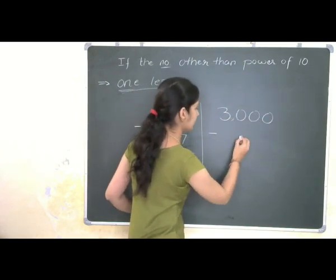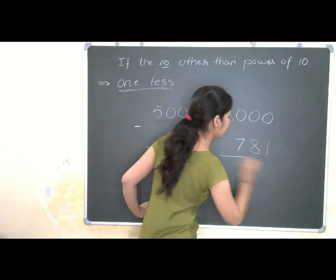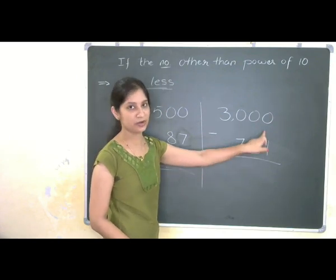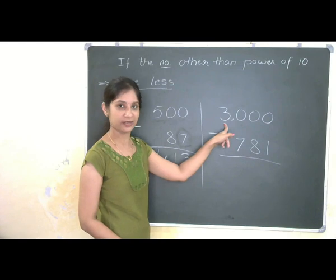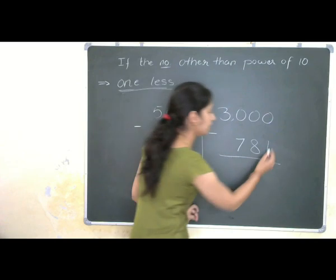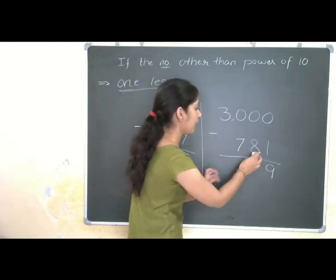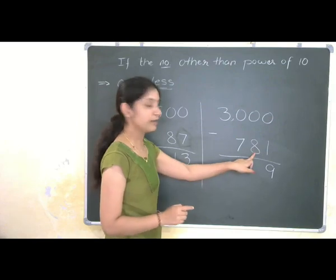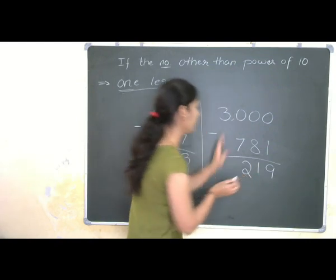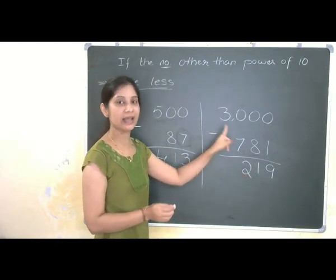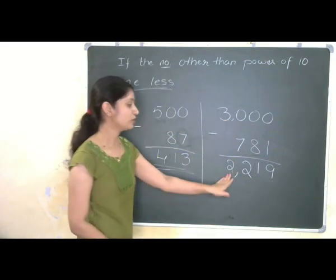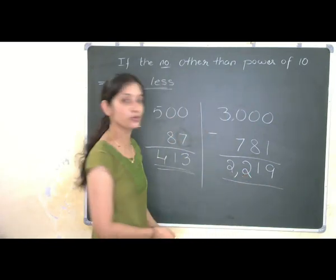Next example: 3000 minus 781. Note the number of digits equals the number of zeros, and it is other than a power of 10. Last from 10: 10 minus 1 gives 9. All other digits from 9: 9 minus 8 gives 1, 9 minus 7 gives 2. Now here it is 3 — one less than 3 is 2, that is 3 minus 1 gives 2. So the answer is 2,219.